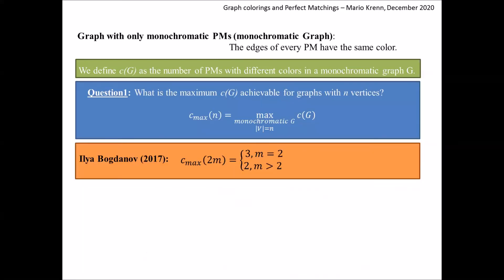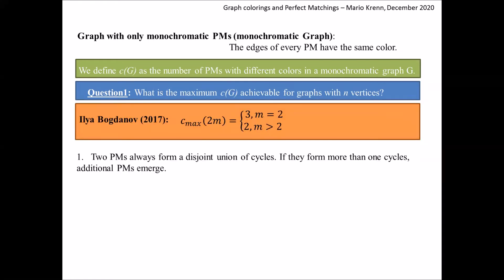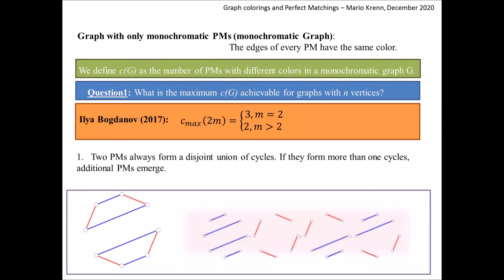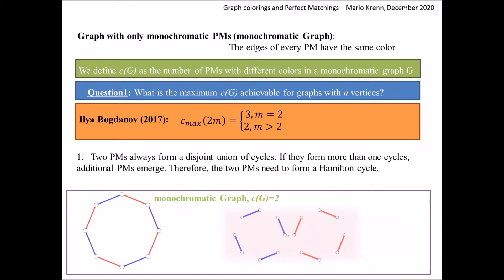This is not a coincidence. Ilya Bogdanov has proven that the maximum number of colors for all graphs with six or more vertices is two. The proof is quite elegant, so let me show it here — it consists of three parts. First, we can easily check that any two perfect matchings form a disjoint union of cycles. If they form more than one cycle, additional perfect matchings emerge and the graph is not monochromatic. Therefore, the two perfect matchings need to form a Hamilton cycle.